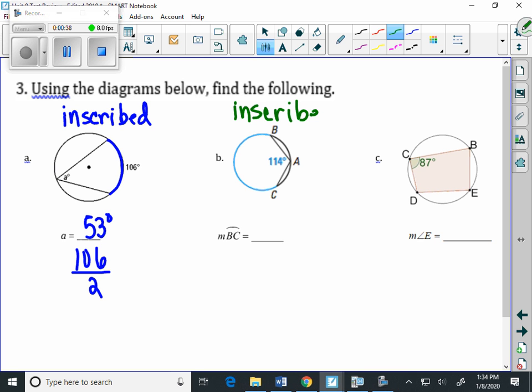Once we identify the fact that it's an inscribed angle, this time we're given the measure of the intercepted angle. That value, this value of 114, is half the measure of the intercepted arc.